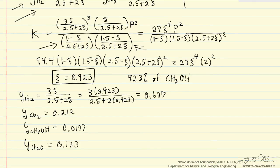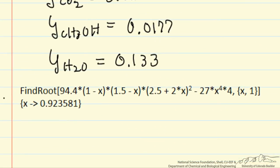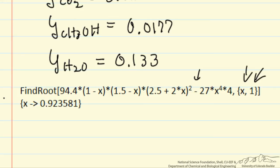I solved this algebraic equation using Mathematica, though there are many ways to solve it. The Mathematica command is FindRoot — typing in the equation with everything on one side equal to zero, indicating I want to solve for x with an initial guess of 1. This gives x, which is psi, the extent of reaction, and so I've now determined the equilibrium conversion at 80 degrees C.